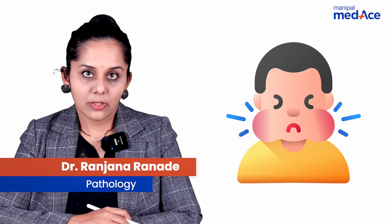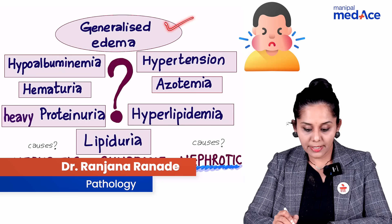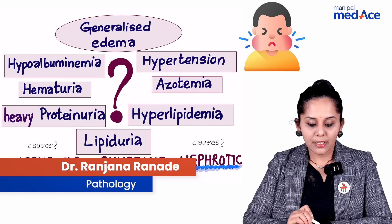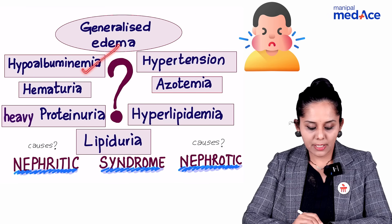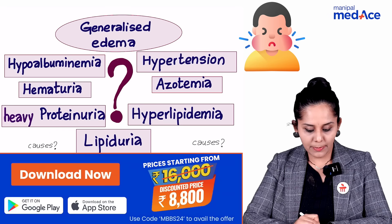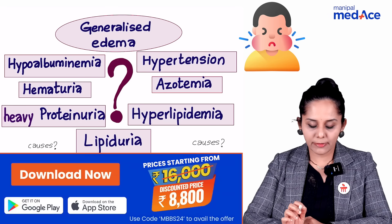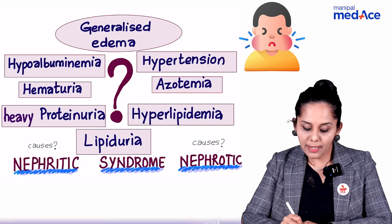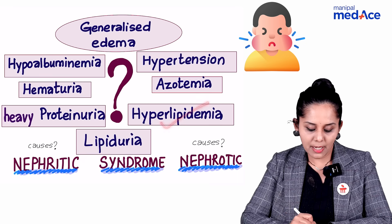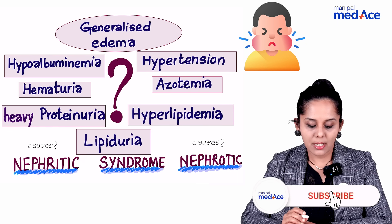A 40-year-old gentleman has generalized edema, there is hypoalbuminemia, there is heavy proteinuria which is more than 3.5 grams per day, there is hyperlipidemia as well as lipiduria.